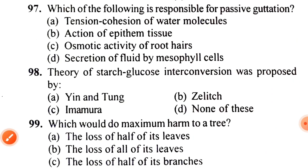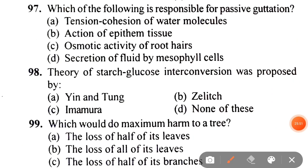Next: which of the following is responsible for passive guttation? A. Tension cohesion of water molecules, B. Action of epithem tissue, C. Osmotic activity of root hairs, D. Secretion of fluid by mesophyll cells. The correct answer is C — osmotic activity of root hairs.